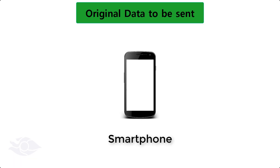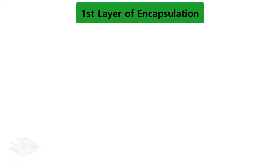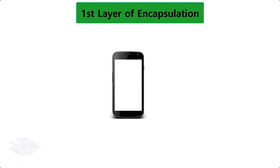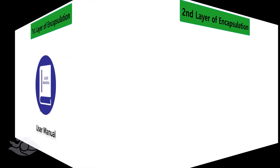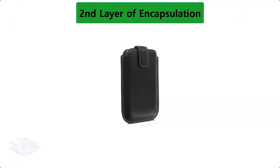First of all, the smartphone is the original data. First layer of encapsulation: we attach a user manual to the phone giving instructions on how to use it. Second layer of encapsulation: we put them both in a smartphone pouch large enough to contain the smartphone and the user manual. In this form, it is called a pouch and not a smartphone since the smartphone is enclosed.